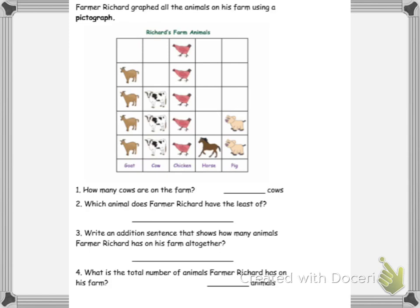So the first thing I do is I write how many is for each category. So the goats, there's one, two, three, four. For cows, there's three. Chickens is one, two, three, four, five. Horses, there's one. Pigs, there's two.